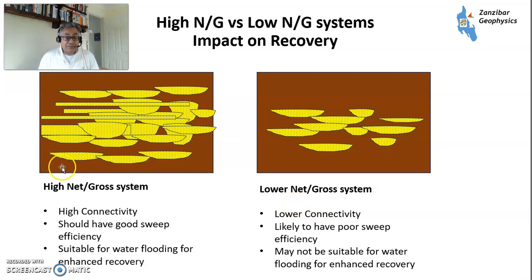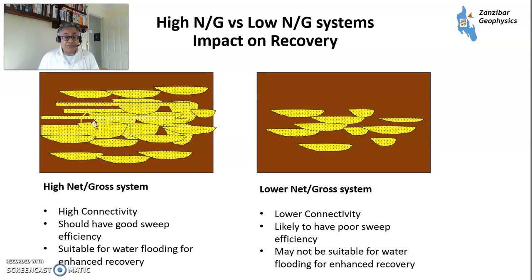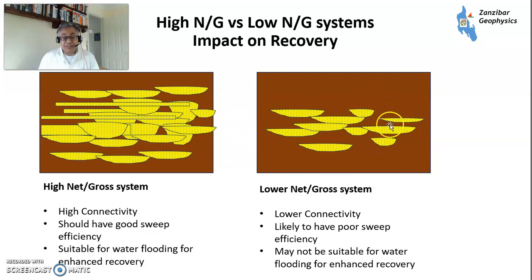Net-to-gross also has a big impact on recovery. A high net-to-gross system has high connectivity and should have good sweep efficiency, making it suitable for water floods. A labyrinthine system has lower connectivity, likely poorer sweep, and may not be suitable for enhanced recovery or water flood. In my own experience, I was working on an oil field with one high net-to-gross unit — basically a channel full of sand — and flanking it were thin channels, sheet floods, et cetera, in a labyrinth system. The channel worked really well for water flood; the labyrinth system, not so much.